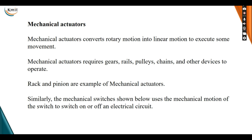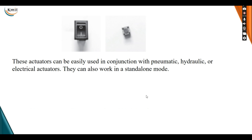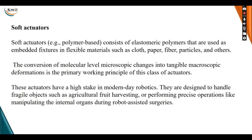The next type is mechanical actuators, which convert rotary motion into linear motion to execute movement. Mechanical actuators require gears, rails, pulleys, chains, and other devices to operate. An example of mechanical actuators is rack and pinion. These actuators can be easily combined with pneumatic, hydraulic, or electronic actuators.